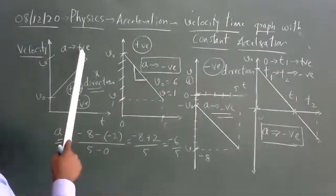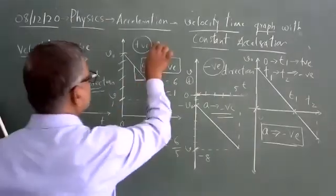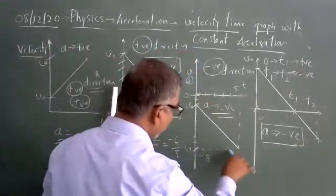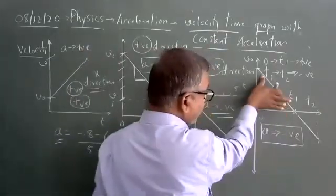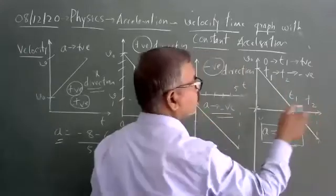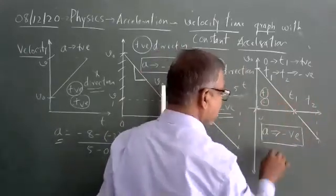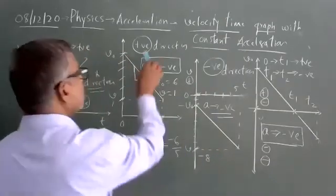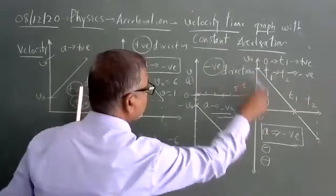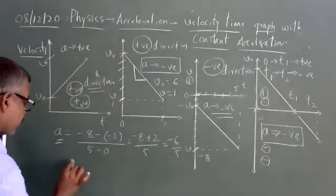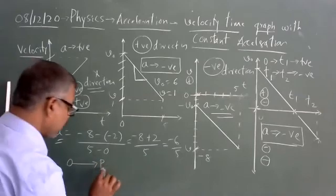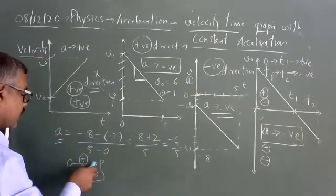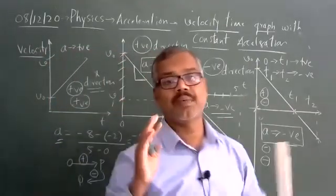There are four graphs: positive direction with positive acceleration; positive direction with negative acceleration; negative direction with negative acceleration; and the combined case where the car starts from O, goes to P in positive x direction, then reverses back to Q in negative direction, with negative acceleration throughout. This completes the velocity-time graph discussion.